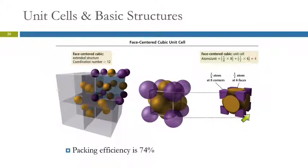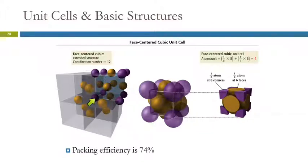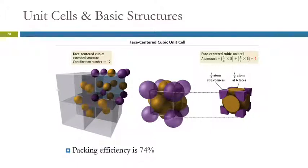Here's the cutaway version and here's the full version. One atom at the corner is in direct contact with 12 other atoms — the coordination number is 12. The packing efficiency is 74%.